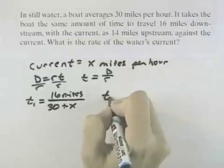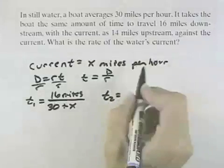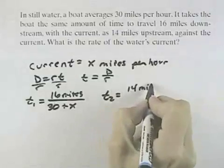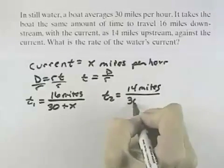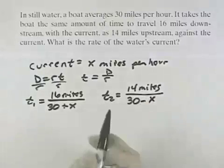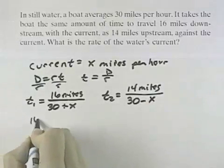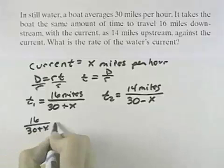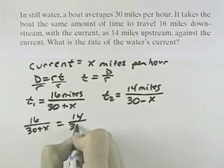My second time, it's going to be going 14 miles as the distance. This time, it's against the current, so instead of going 30 miles per hour, I'm going slower. I'm taking the current away from that, and I know that these two times are equal. So if I set 16 over 30 plus x equal to 14 over 30 minus x, I can cross multiply to solve this.